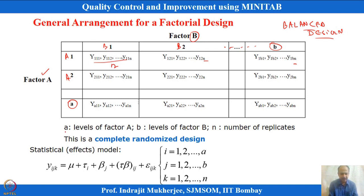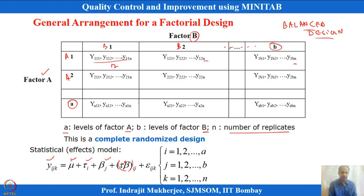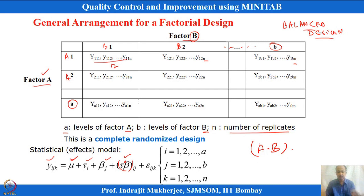The mathematical model for each observation is: Y = μ + τ_i + β_j + (τβ)_ij + ε, where μ is the overall mean, τ_i is the effect of Factor A, β_j is the effect of Factor B, and (τβ)_ij is the interaction term. With more than one factor, there is a possibility of interaction, which is the A×B cross term.